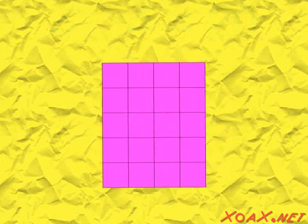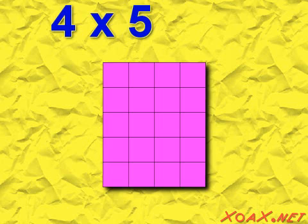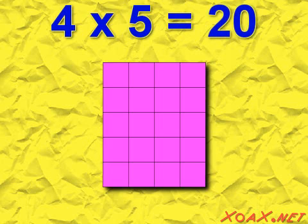If we rotate the region, we can see that multiplication works the other way too. That is 4 times 5 is also 20.